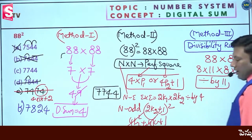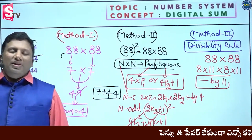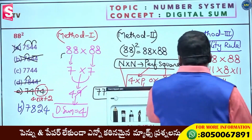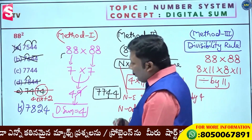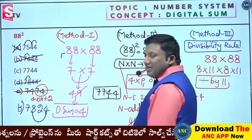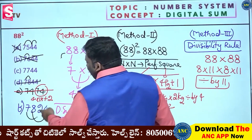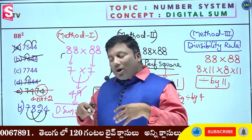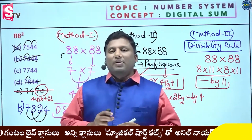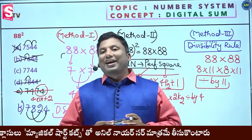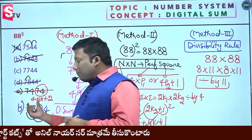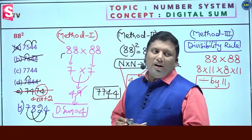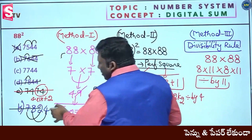So it should divide by 11. For option 7824 - divisibility by 11: sum of odd places is 8 plus 4 equals 12. Sum of even places is 7 plus 2 equals 9. 12 minus 9 equals 3. The difference should be 0 or a multiple of 11. Since 3 is neither 0 nor a multiple of 11, this option is eliminated.